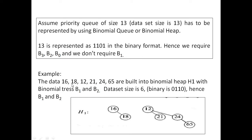In this example, we have taken 6 different numbers. 6 is represented as 1, 1, 0 in the binary equivalent format. So, we require 1 b2 binomial tree and 1 b1 binomial tree. The first 2 elements, 16 and 18, are represented as a b1 binomial tree. The remaining 4 elements, 12, 21, 24, 65, are built as a b2 binomial tree. The minimum element 12 forms the root node, and the remaining elements follow the heap order property.